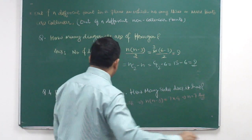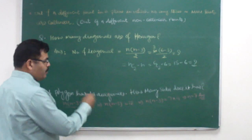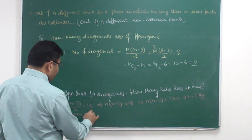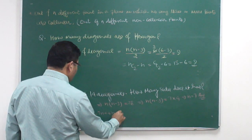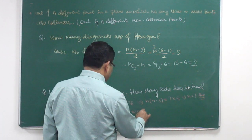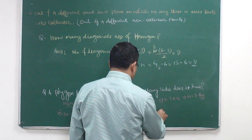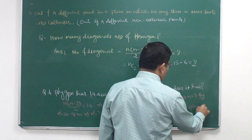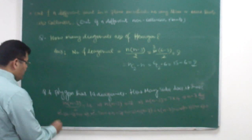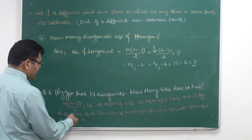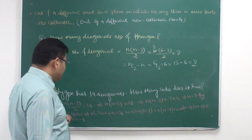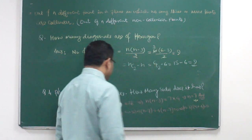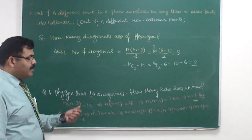Alternatively, those who prefer algebra can form a quadratic equation: N squared minus 3N minus 28 equals 0, which factors as N squared minus 7N plus 4N minus 28 equals 0, giving N minus 7 times N plus 4 equals 0. So either N equals 7 or N equals minus 4. But N cannot be negative, so N equals 7. But that is all a waste of time — the comparison method is faster. A polygon with 14 diagonals has 7 sides.